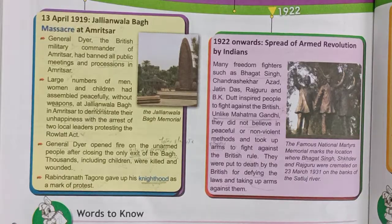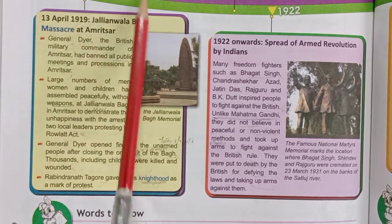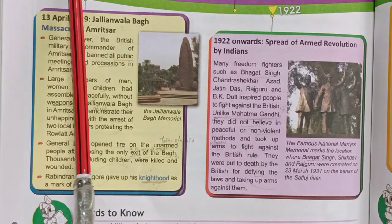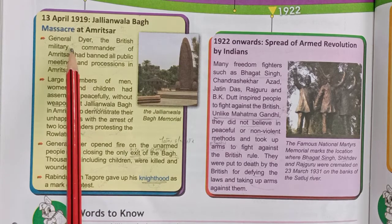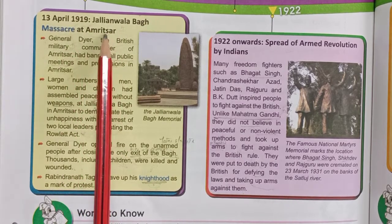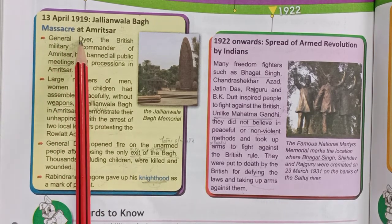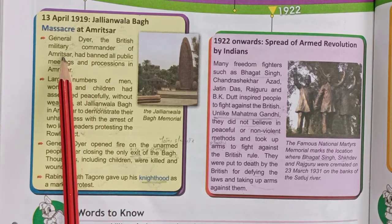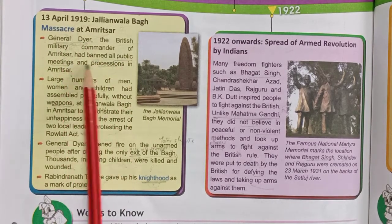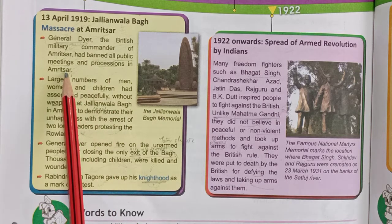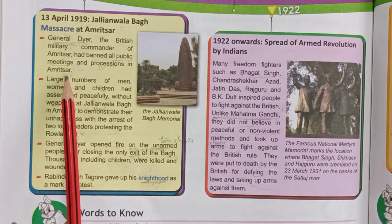Next, on 13 April 1919, the Jallianwala Bagh massacre took place at Amritsar. Gandhi's Satyagraha meant getting freedom without violence, peacefully. General Dyer, the British military commander of Amritsar, had banned all public meetings and processions in Amritsar.